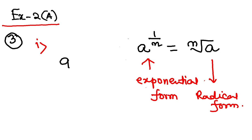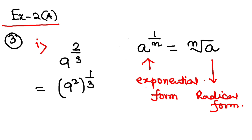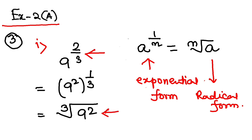So, 9 to the power 2 by 3 is the question given. This can be written as 9 squared, to the power 1 by 3. Now, 1 by 3 means we take the cube root, so this becomes the cube root of 9 squared. This was in index form and this one is in radical form. That is question 3.1.